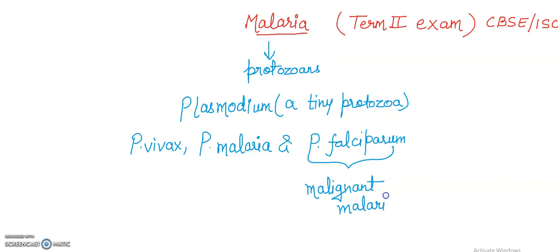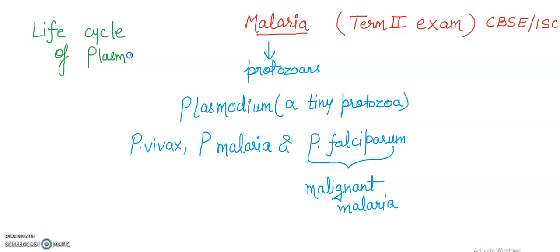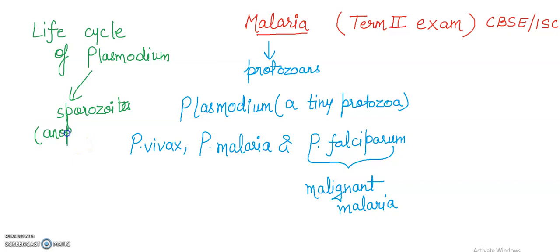Now let us take a glance at the life cycle of Plasmodium. When Plasmodium enters the human body, it enters in the form of sporozoites, which is the infectious form. This occurs through the bite of an infected female Anopheles mosquito. You can note this point: it is the female Anopheles mosquito that is responsible — not the male.